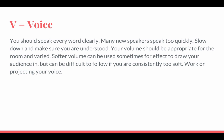V is for voice. You should speak every word clearly. Many new speakers speak too quickly — this is why in a lot of these videos I'm going a little slower than normal, to make sure I speak every word clearly. Your volume should also be appropriate for the room and should vary throughout the speech. Speaking softly sometimes can draw your audience in, but you don't want the entire speech too soft. You also need to project your voice so it's loud and clear when needed.